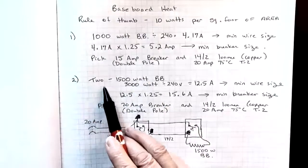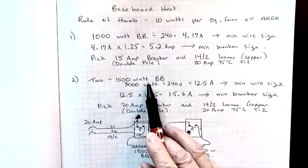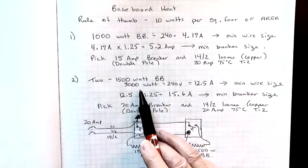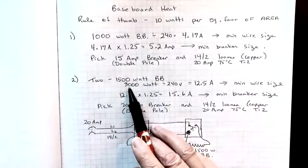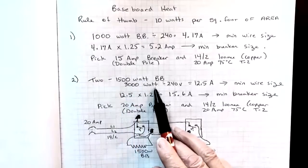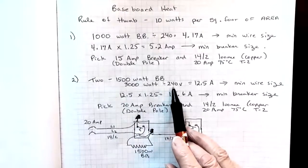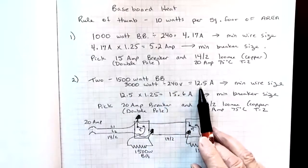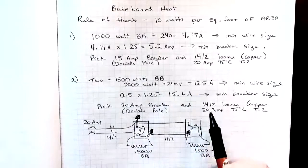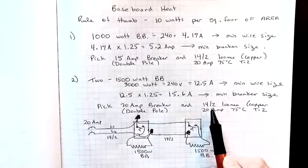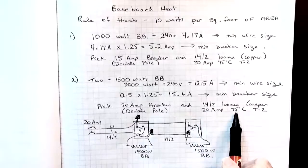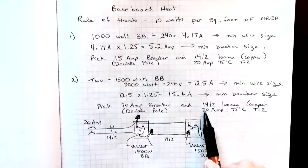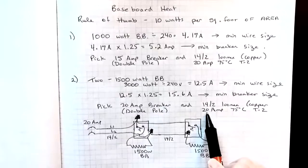Our second example is two 1500 watt baseboard heaters. Let's say we were putting these on a circuit in a large rec room. So 1500 watts times 2 gives me 3000 watts in total. Again, I'm assuming these are 240 volt baseboard heaters. So divide by 240 gives me a minimum ampacity for my wire of 12.5 amps. Again, looking down here, if I went to table two in the 75 degree column, I could choose a 14.2, which is good for 20 amps.